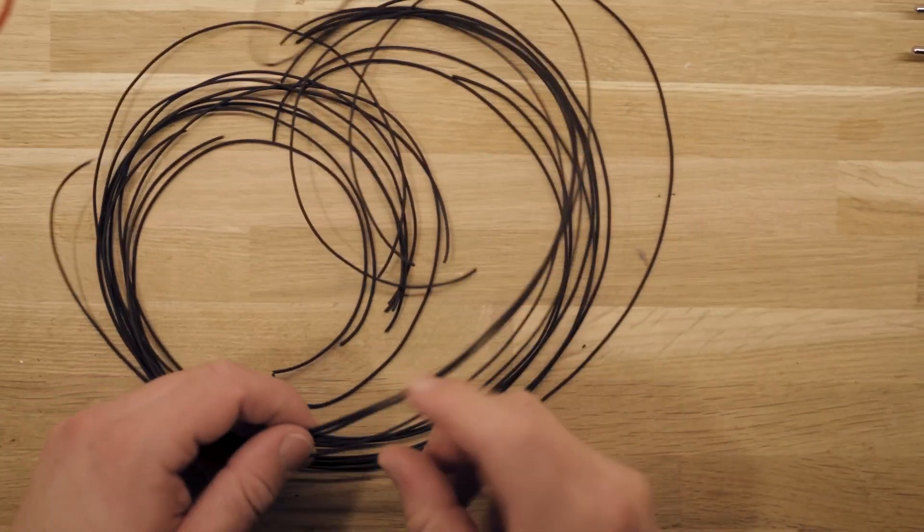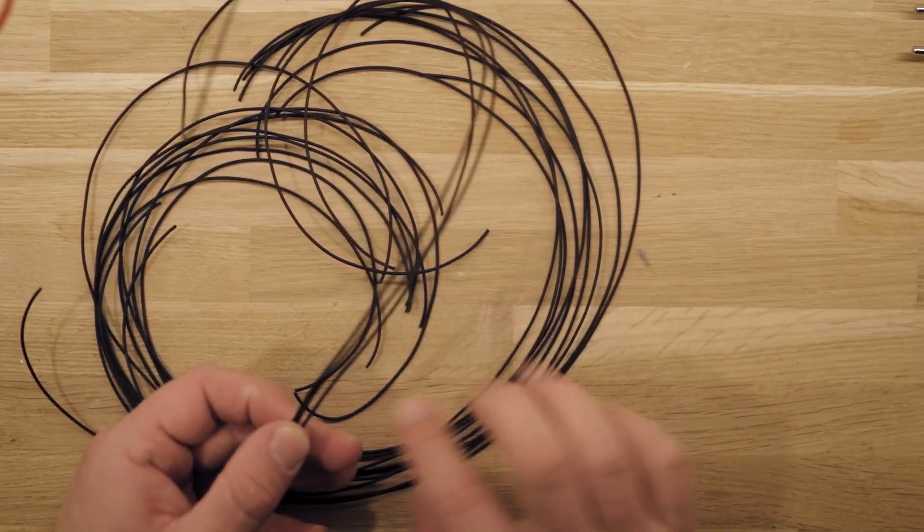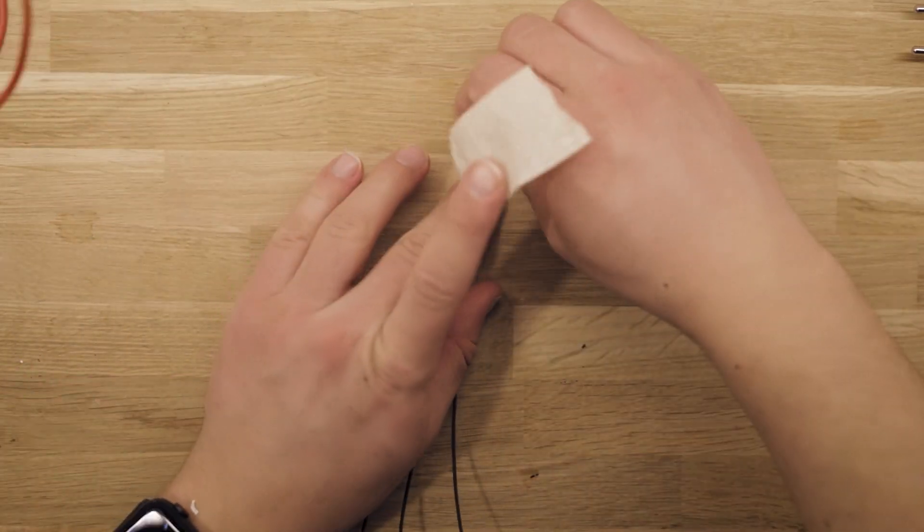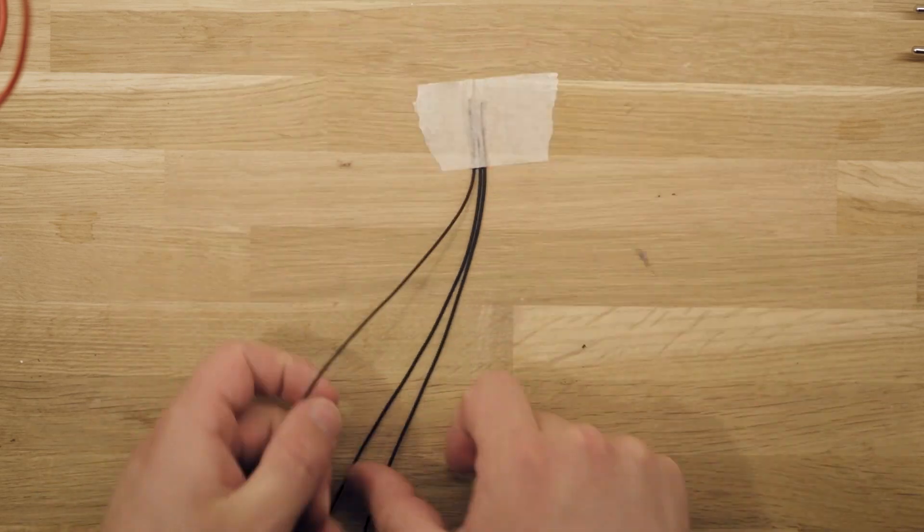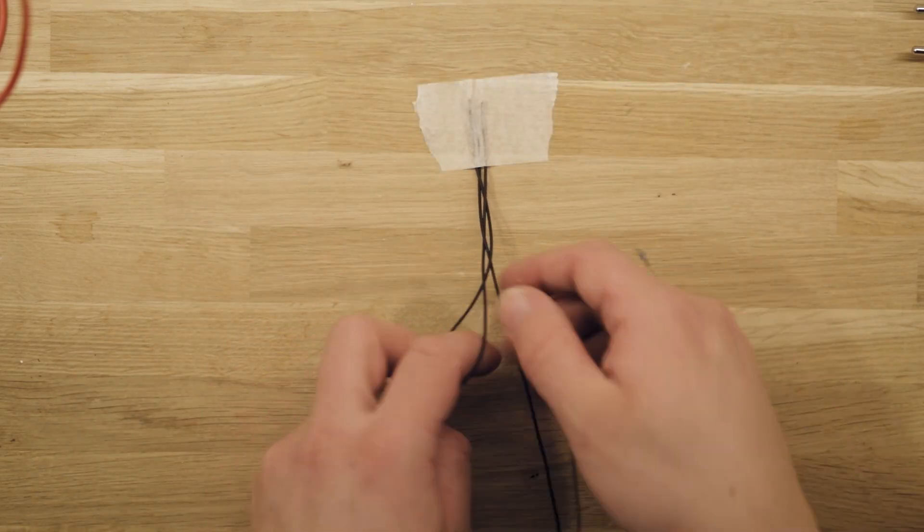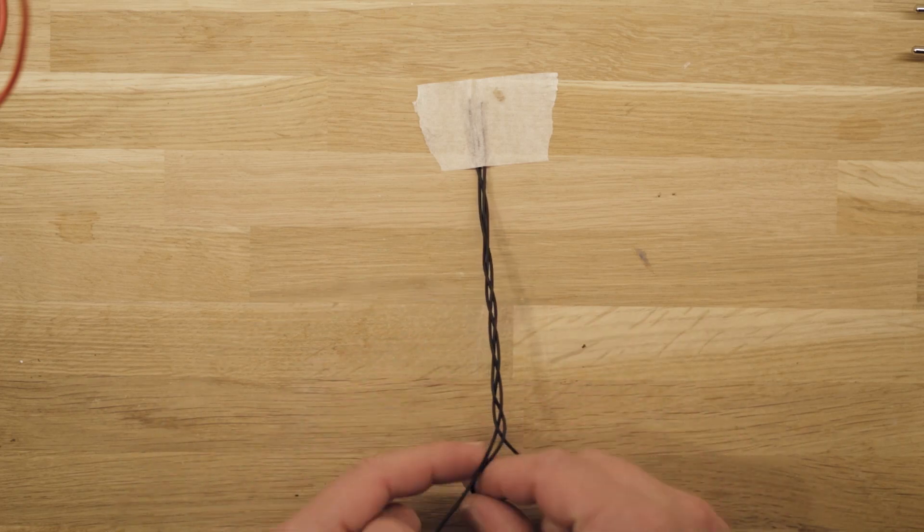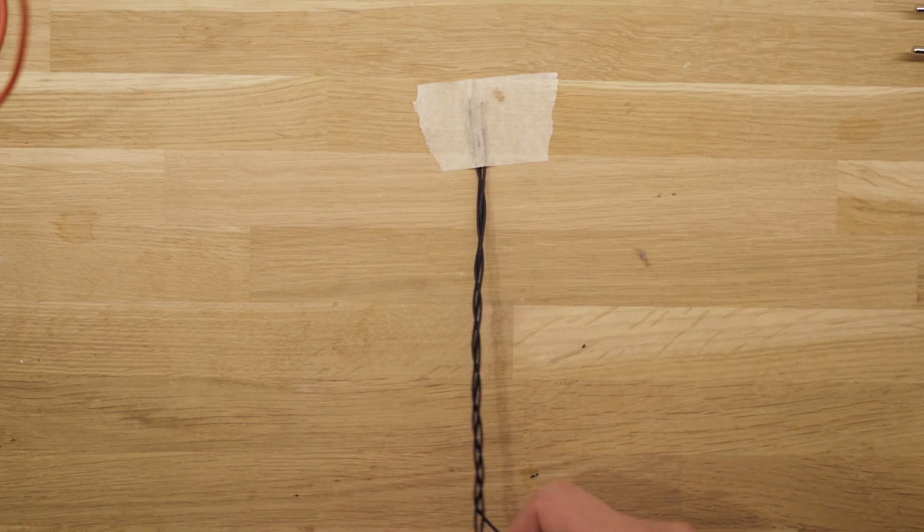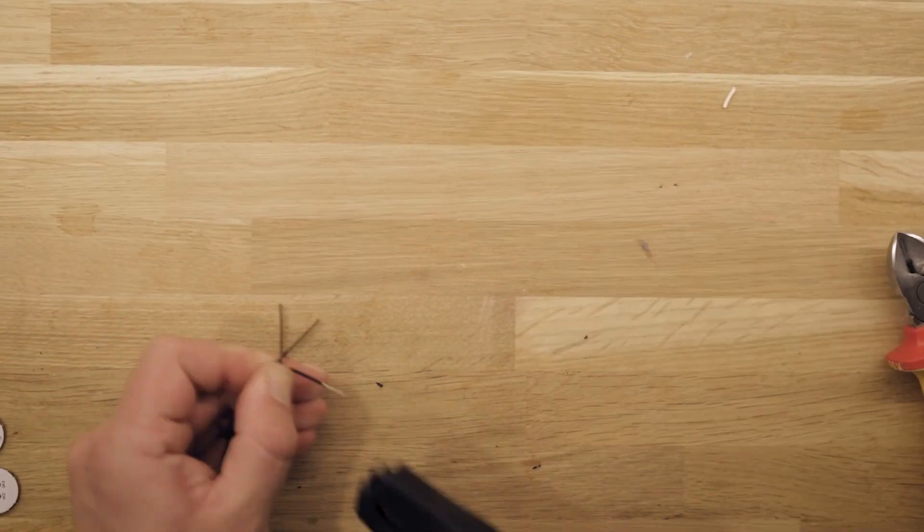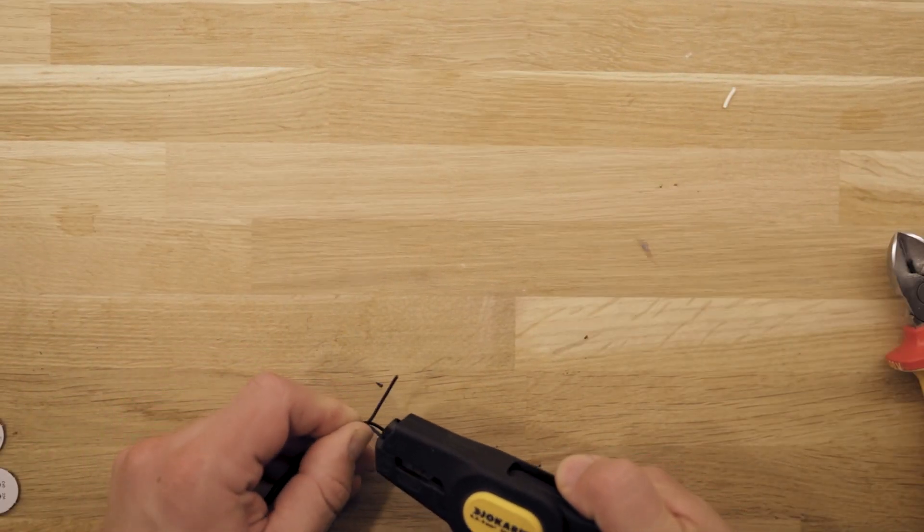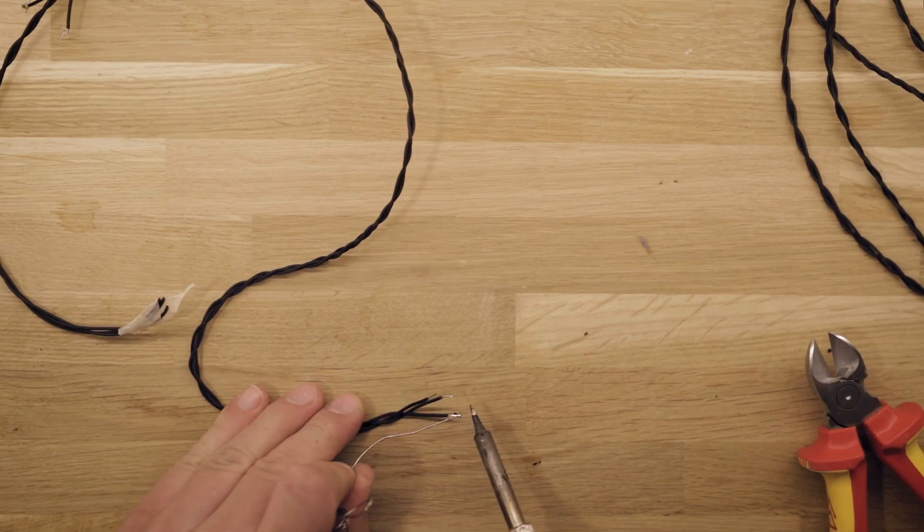Now it's time to make the wires for the PCBs. Each PCB is connected with three wires. One for power, one for ground and a third PWM wire to dim the lights individually. Each of the three wires are stripped and then soldered onto the PCB.